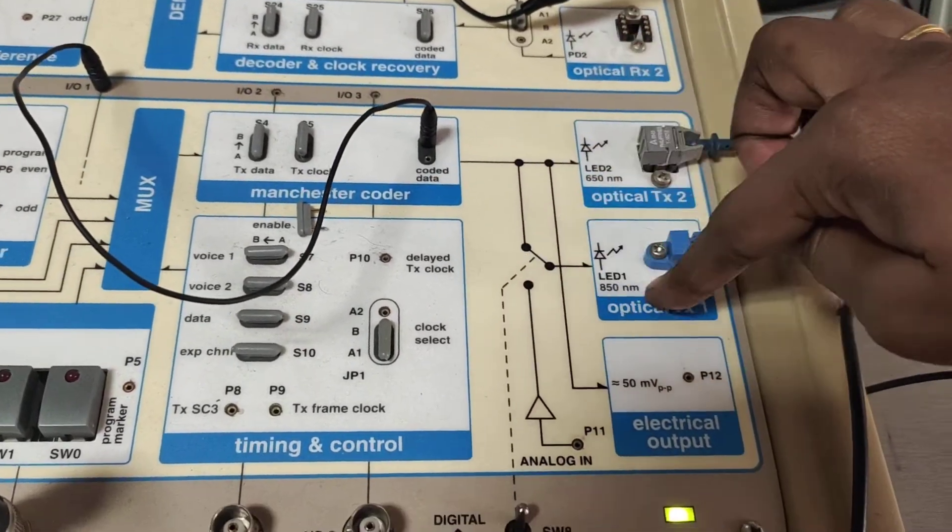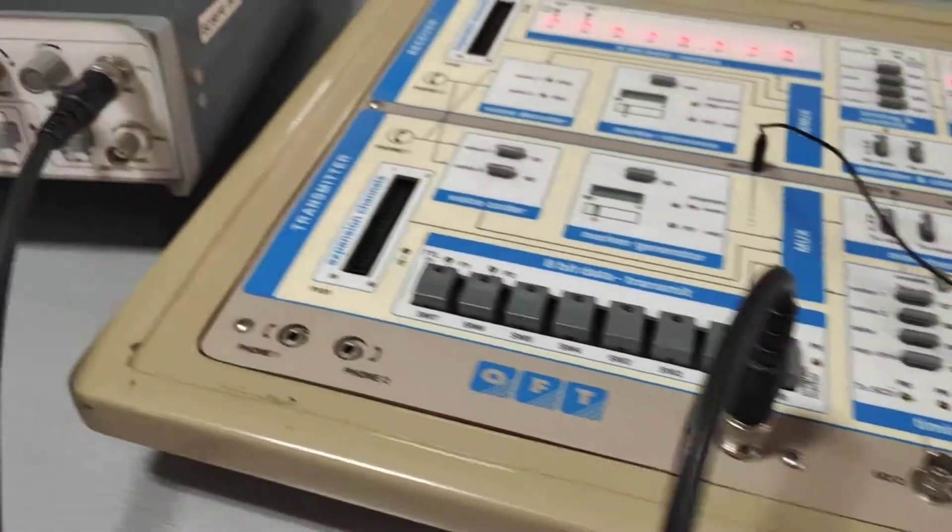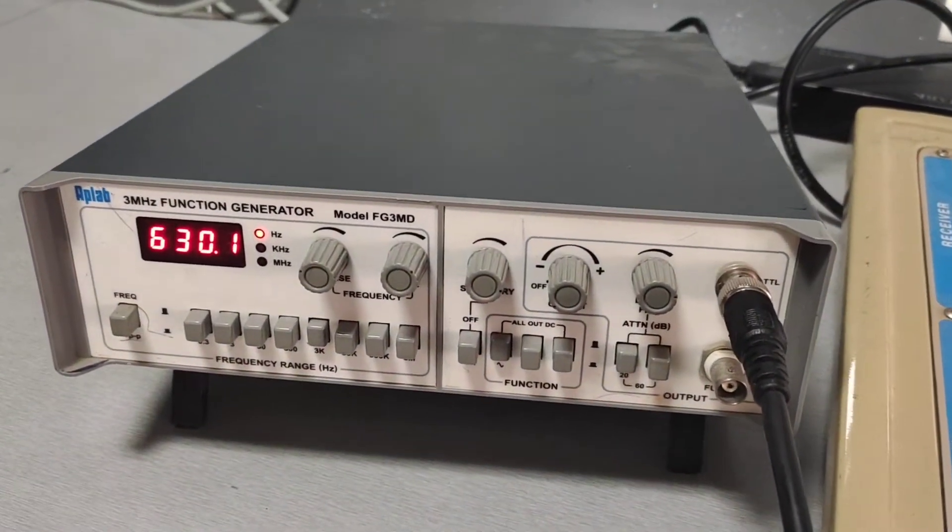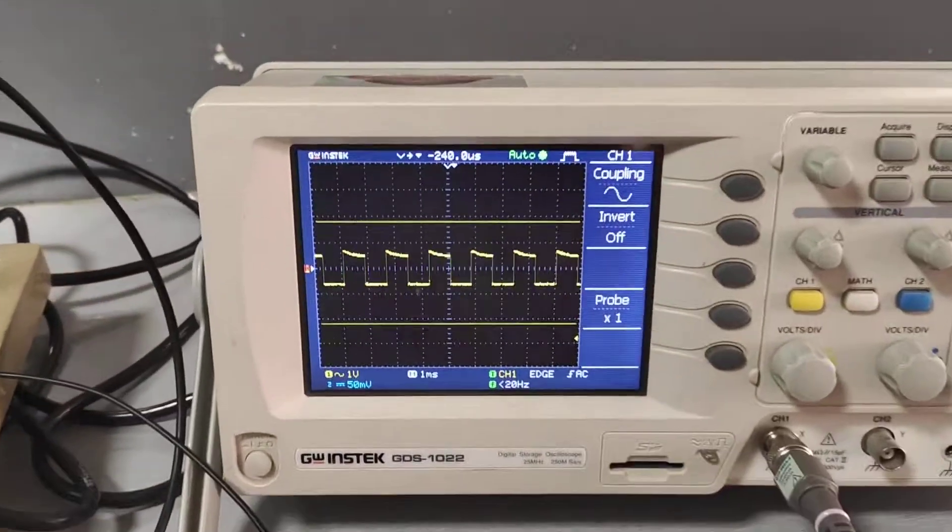Now, this coded data is given to the optical transmitter. We set up the frequency 630 Hertz. Then, we will note down the corresponding output.